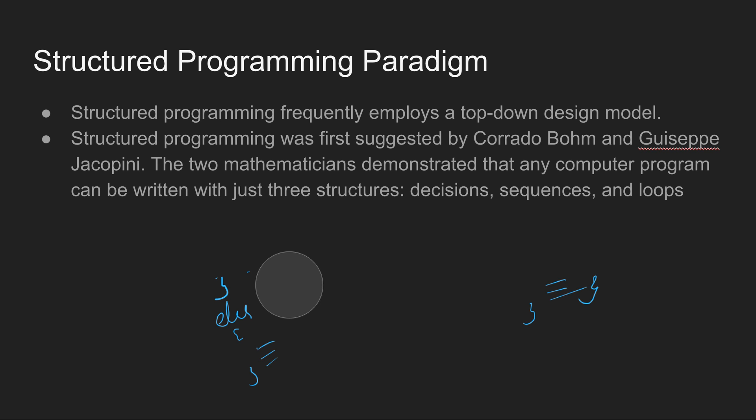These two mathematicians claimed that any programming language can be written with these three structures. But actually, that statement was false when object-oriented programming languages came into existence.